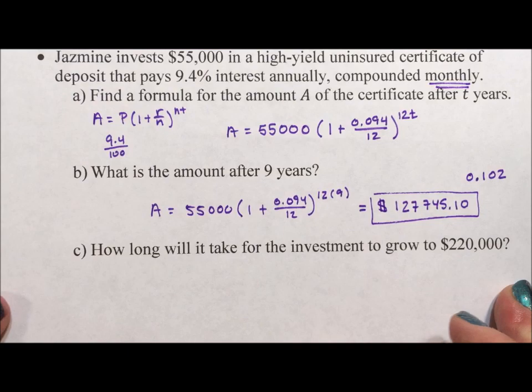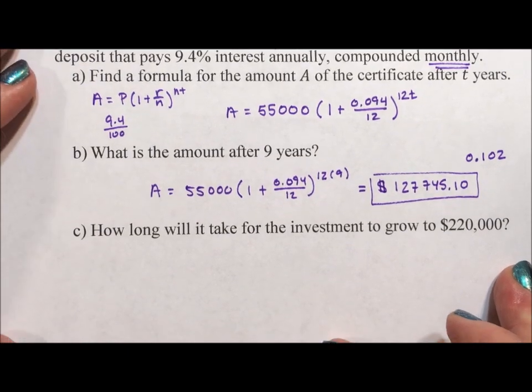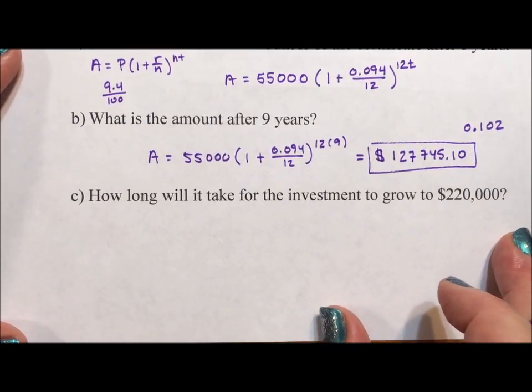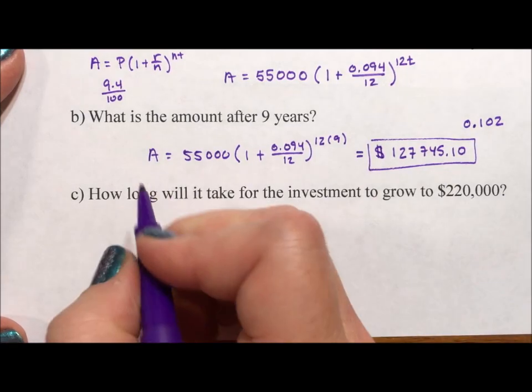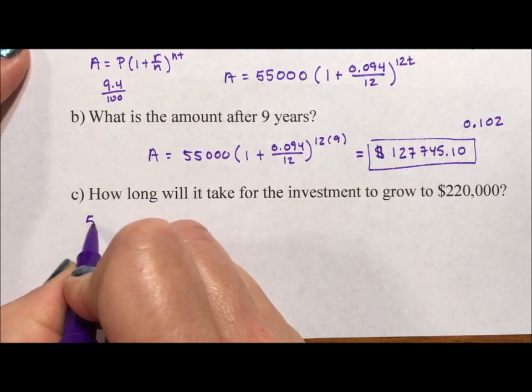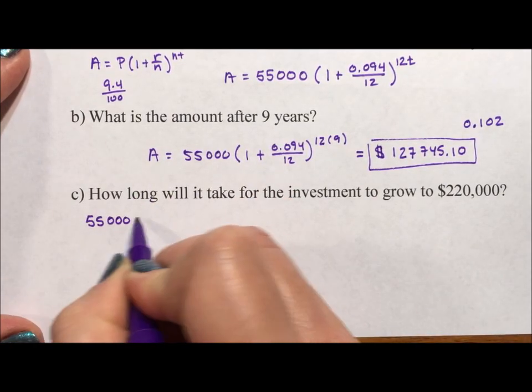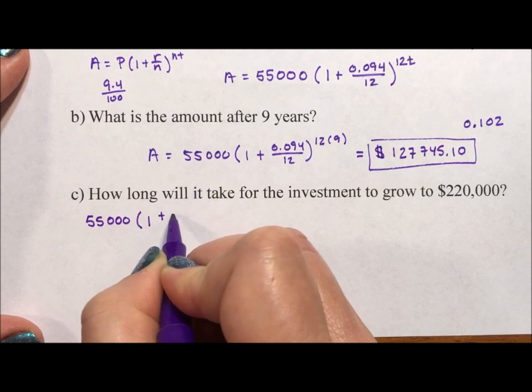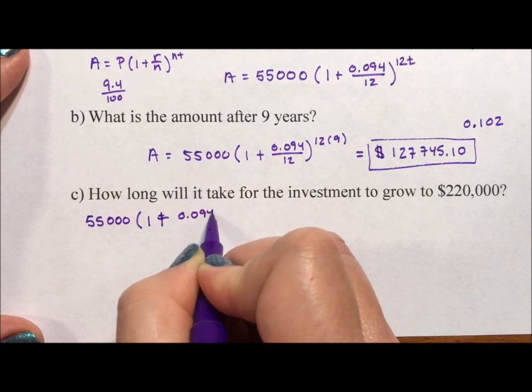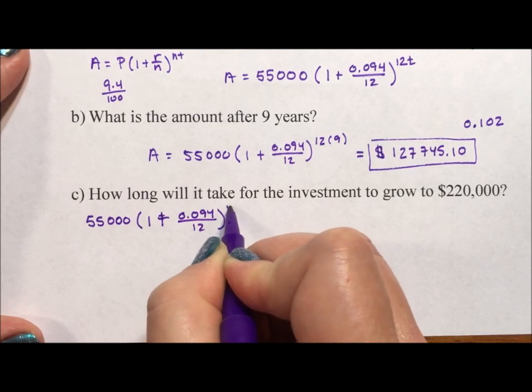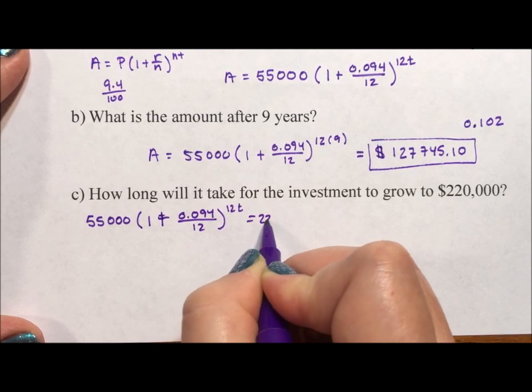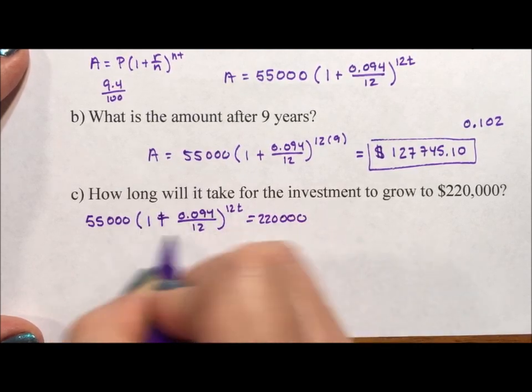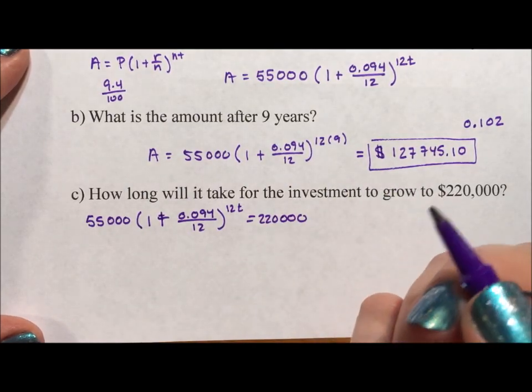Alright, and then how long will it take for the investment to grow to $220,000? So what we want to know is when is 55,000(1 + 0.094/12)^(12t), when does this equal $220,000? If you're asking if I'm going to keep this in this ugly form, the answer is yes.